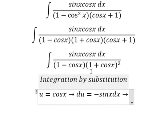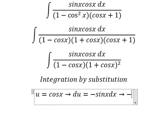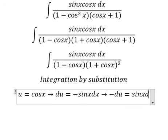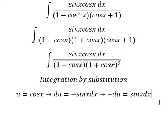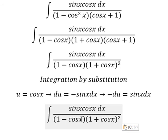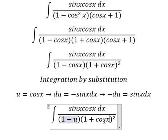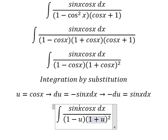Because we don't have a negative sign in our expression, we rearrange: negative du equals sin(x) dx. Then we substitute: each cos(x) term changes to u, and sin(x) dx changes to negative du.